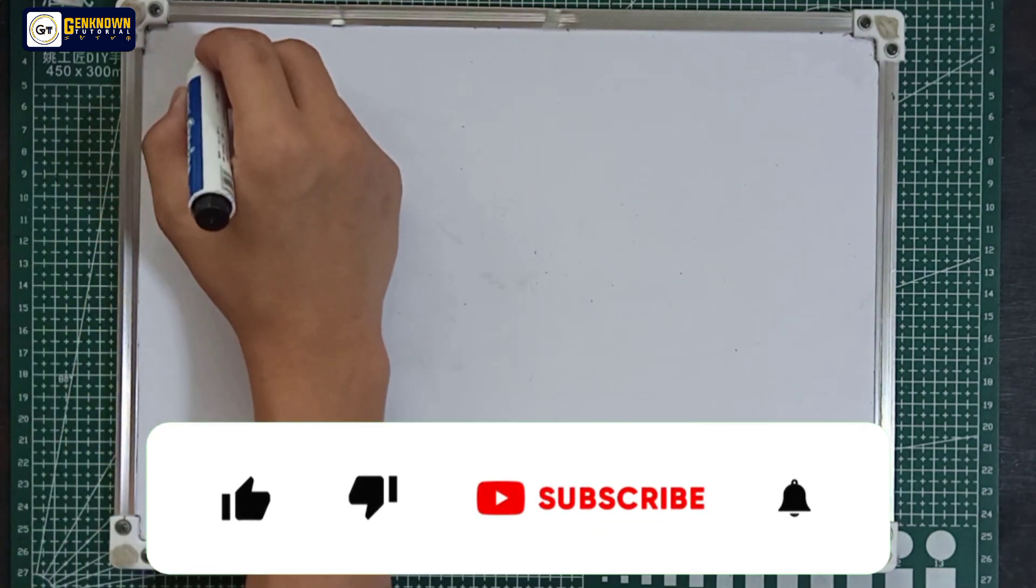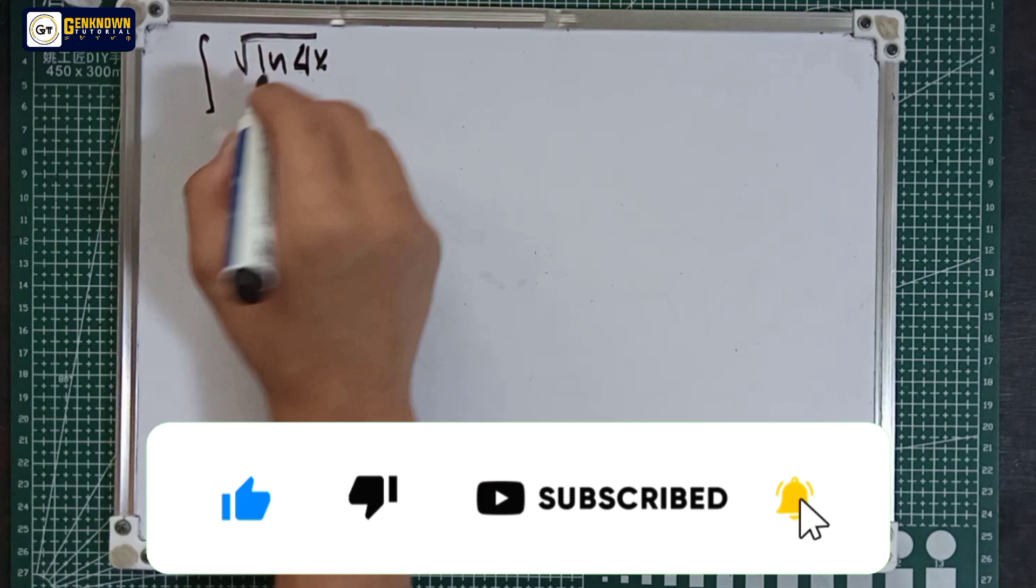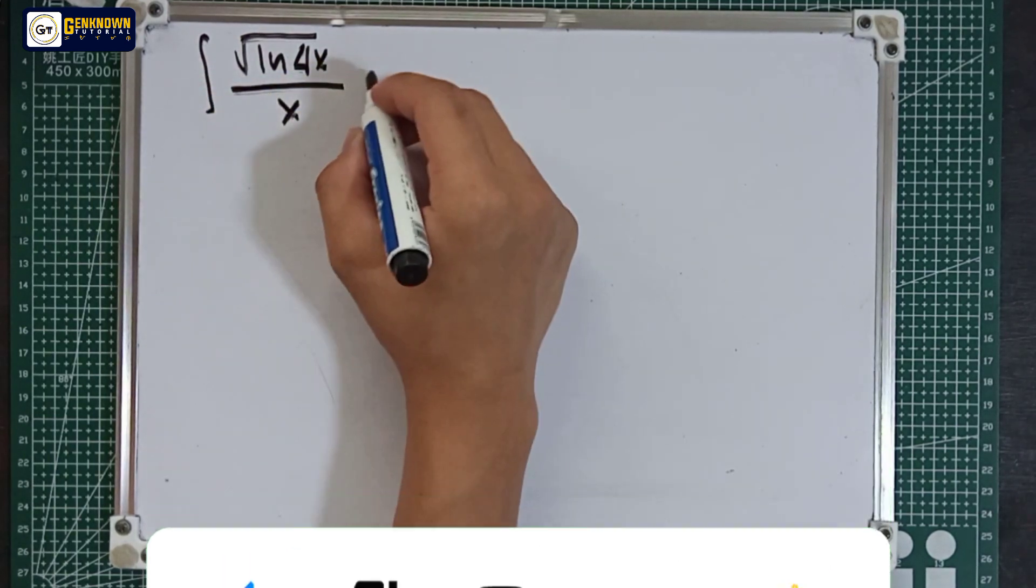Number 8 is the integral of the square root of ln 4x all over x, multiplied by dx.